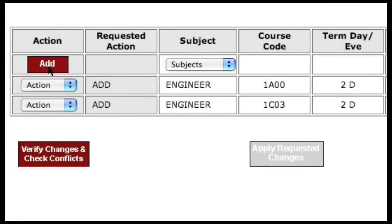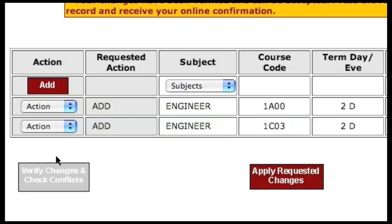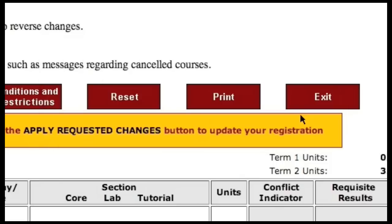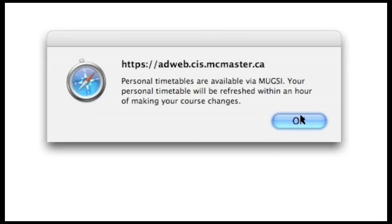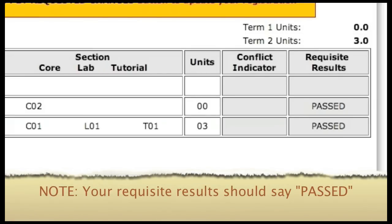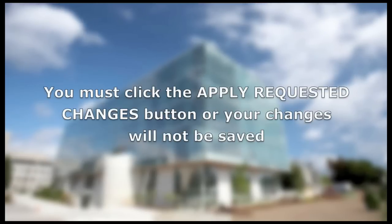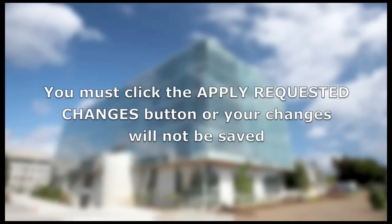Once you've added all your courses for your Level 1 program, click on the 'Verify Changes and Check Conflicts' button. You will be shown a list of all the courses you added and asked to confirm them. Click on the 'Apply Requested Changes' button to confirm your course selections. You'll notice a column on the right side of the main window with the word PASSED beside all of your courses. If you do not see PASSED, there is a conflict you will need to correct and SOLAR will tell you what it is. Registration is a two-step process, so you must confirm all changes by clicking Apply Requested Changes — otherwise all changes will be lost and registration will not be successful.